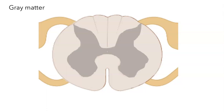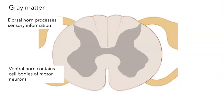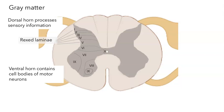Looking at the gray matter, the dorsal horn processes sensory information and the ventral horn contains the cell bodies of motor neurons. Because different parts of the gray matter do different things, there are differences in cytoarchitecture. The fine-scale structure of the spinal cord is laminar — these are called Rexed laminae, represented with Roman numerals I through X. Layers I through V are in the dorsal horn; layer IX lies in the ventral horn and contains the cell bodies of skeletal motor neurons; layer X surrounds the central canal. Layer I is the marginal zone, layer II is the substantia gelatinosa, and layers III and IV contain the nucleus proprius.